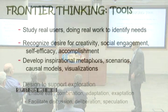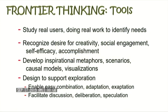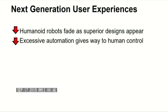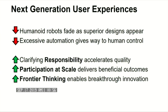Design should support exploration — combinatorial adaptation of existing ideas, exaptation of ideas from other domains, facilitating discussion, deliberation, and speculation. To close: we are in a continuing discussion about rationalism versus empiricism — both have value. We really need to consider complex situations where context varies and an empirical approach is required rather than simply a logical, rational one. I'm against humanoid robots; I think they will fade as superior designs appear. Excessive automation will give way to human control. Clarifying responsibility accelerates quality, participation at scale delivers beneficial outcomes, and frontier thinking enables breakthroughs. Thank you.